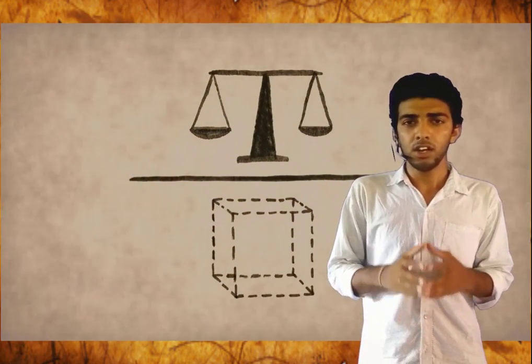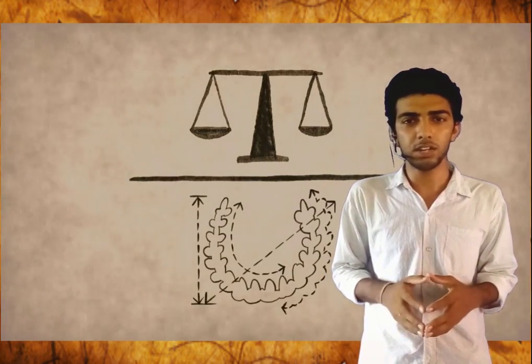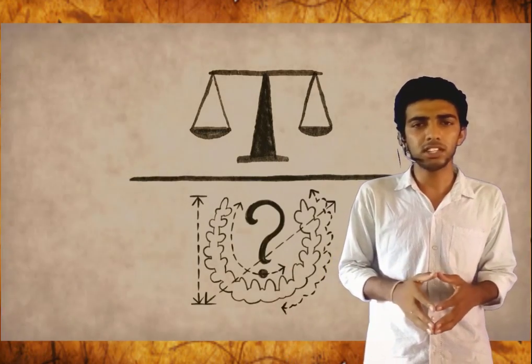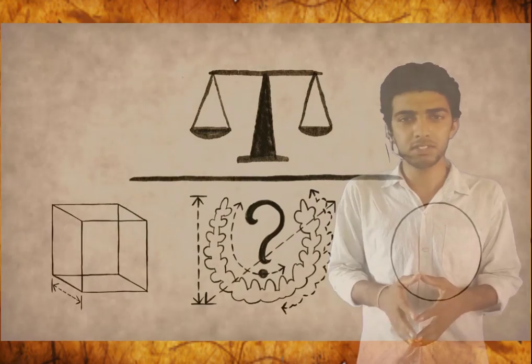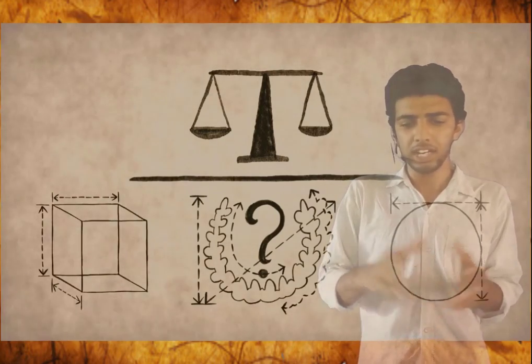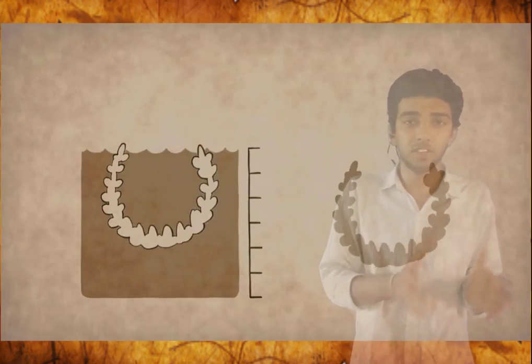But measuring the volume of the crown is not so easy due to its irregular shape. You can measure the volume of a cube or sphere — such simple shapes — but not of irregular shapes. The solution he realized is to put the crown into water and then measure the volume of the displaced water. It must be equal to the volume of the crown. In this way, he can calculate the volume as well as the density of the crown.